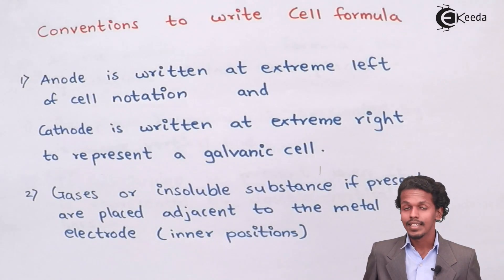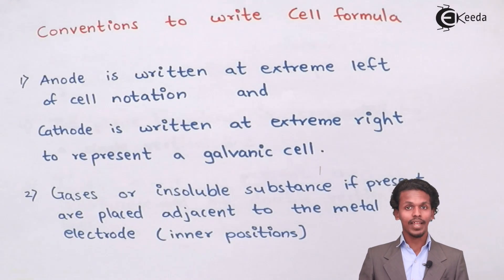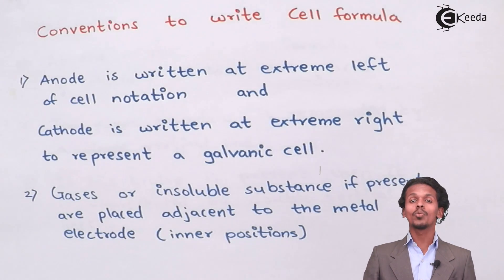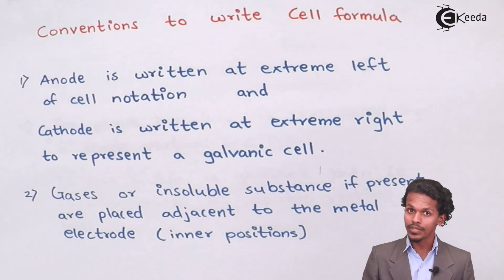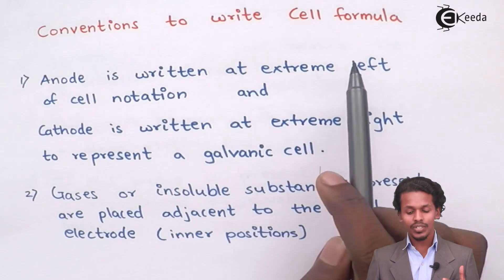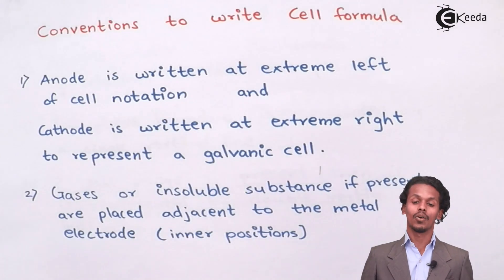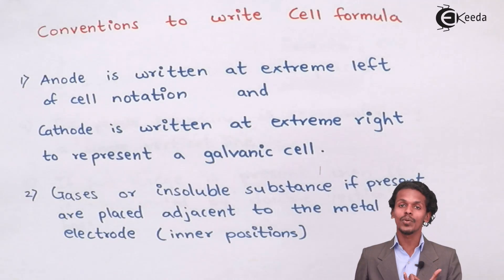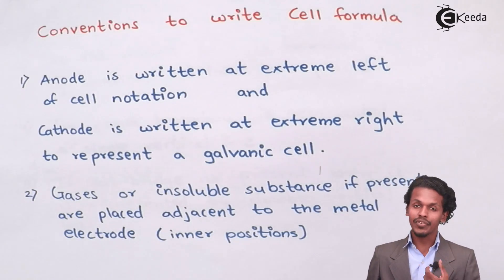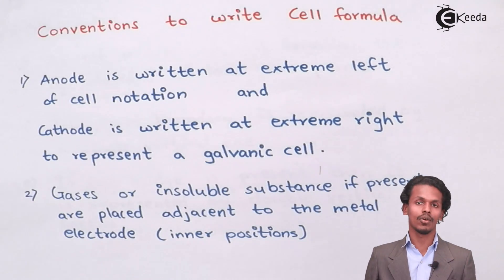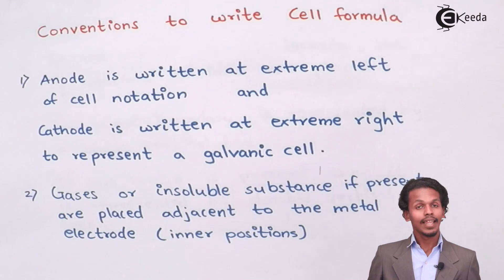When we talk about a galvanic cell, both the anode and cathode are involved, and it is not necessary to draw the cell diagram every time. To make it short, there are certain criteria we are going to follow. The first one is that the anode is written at the extreme left of the cell notation or cell formula.